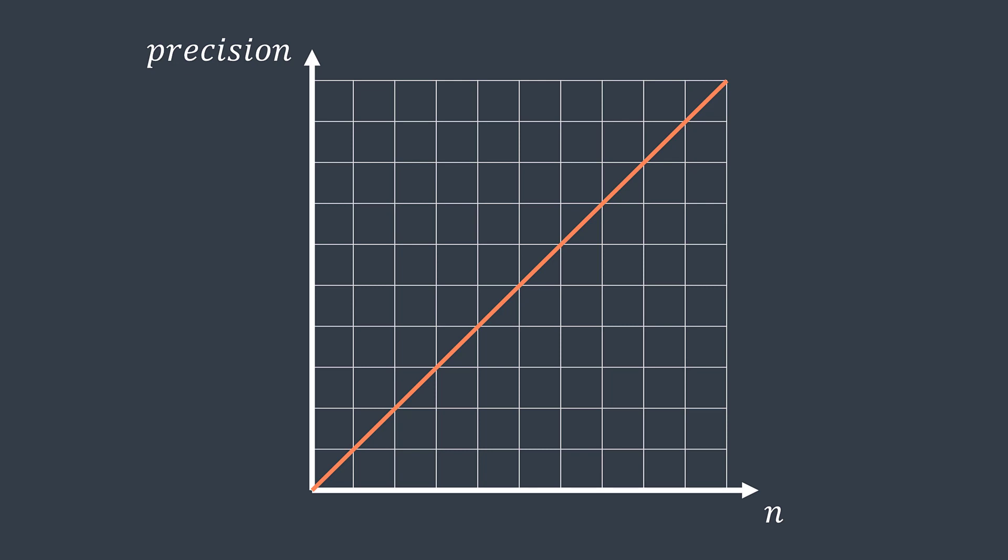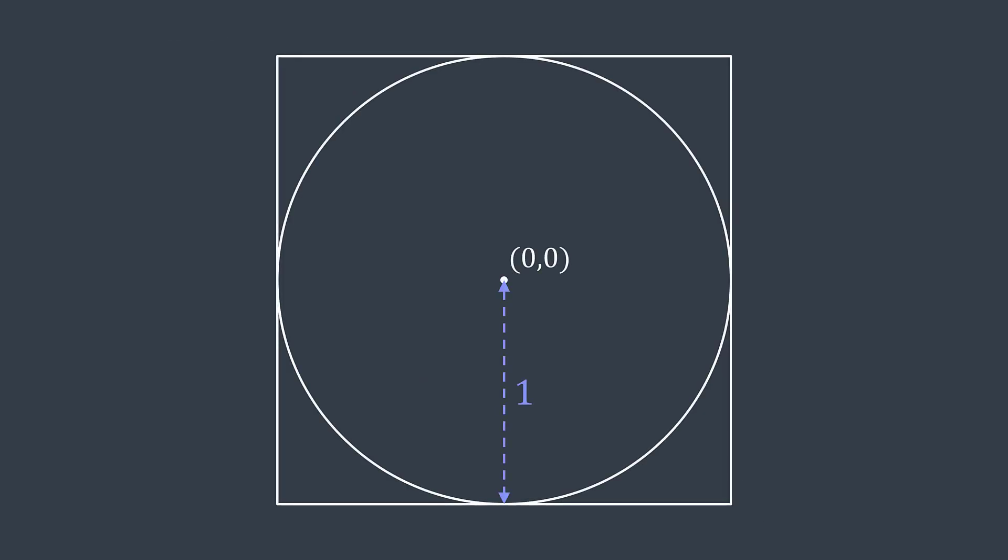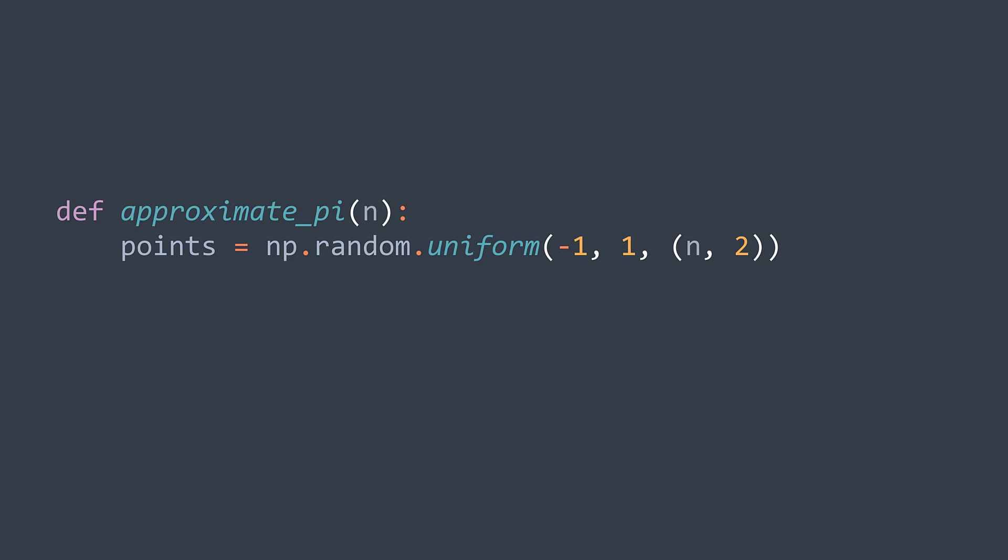Before, let's implement this algorithm. We will be using Python with the NumPy module. We assume that our circle is centered at 0, 0, and that its radius is 1. So the side of the square has a length of 2, and it's between minus 1 and 1 in both x and y axis. This is why, to generate a point in the square, we just generate two random numbers between minus 1 and 1. And we want to generate n points, so we generate a matrix of random numbers between minus 1 and 1 of n rows and two columns.